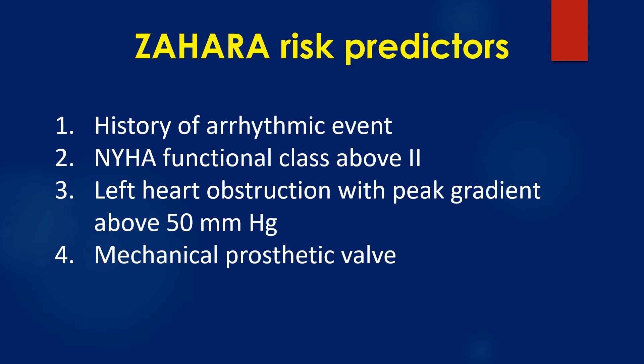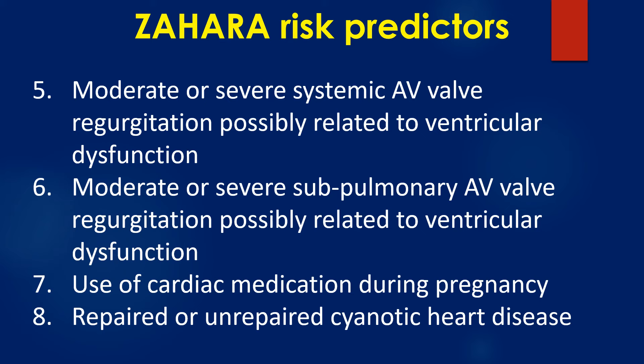ZAHARA risk predictors include: 1) history of arrhythmic event; 2) NYHA functional class above 2; 3) left heart obstruction with peak gradient above 50 mmHg; 4) mechanical prosthetic valve; 5) moderate or severe systemic AV valve regurgitation possibly related to ventricular dysfunction; 6) moderate or severe subpulmonary AV valve regurgitation; 7) use of cardiac medication during pregnancy; and 8) repaired or unrepaired cyanotic heart disease.